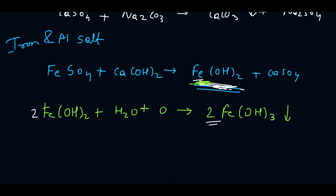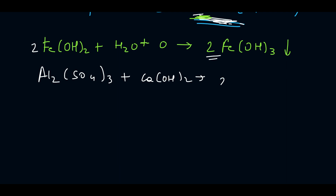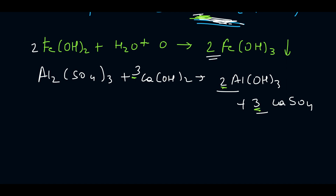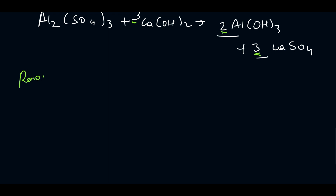For the removal of aluminium salt: Al₂(SO₄)₃ plus 3 Ca(OH)₂ gives 2 Al(OH)₃ plus 3 CaSO₄. For balancing this reaction, the coefficients 2 and 3 are used — if we do not take these coefficients the reaction will not balance on both sides.